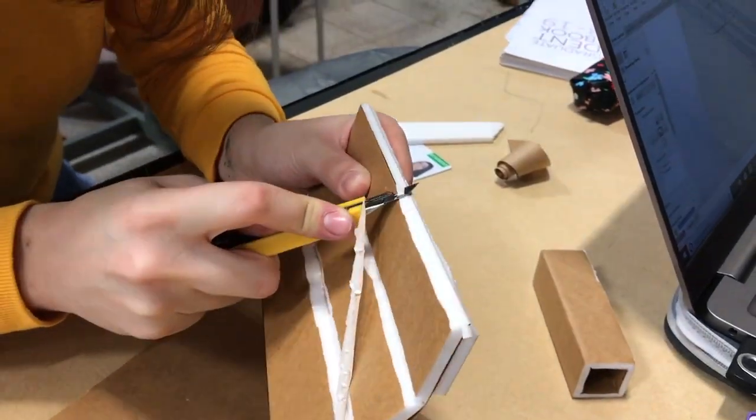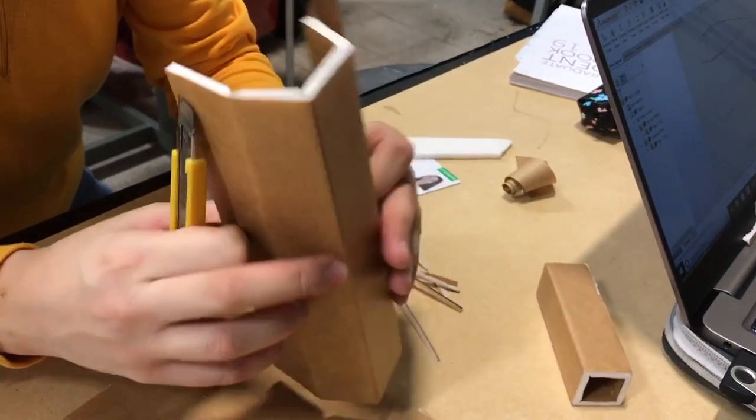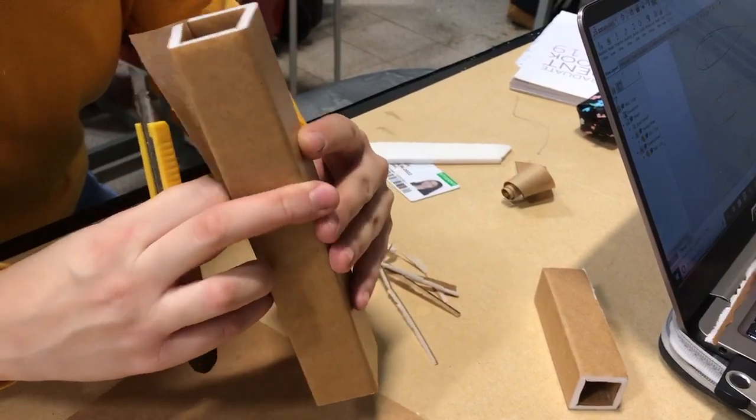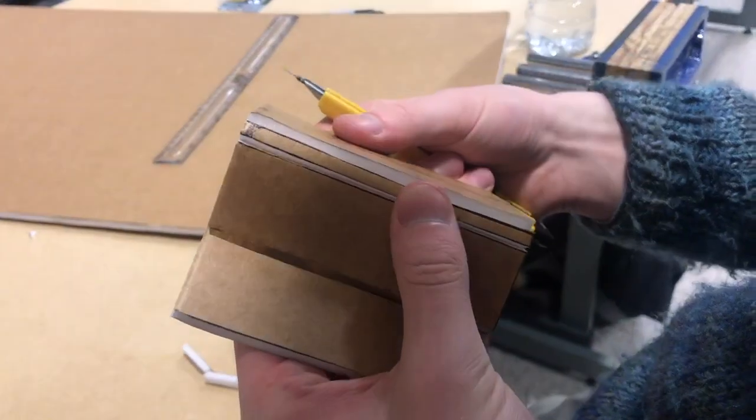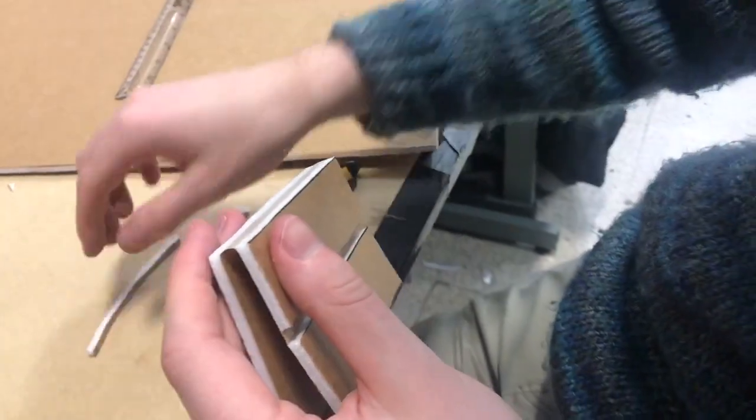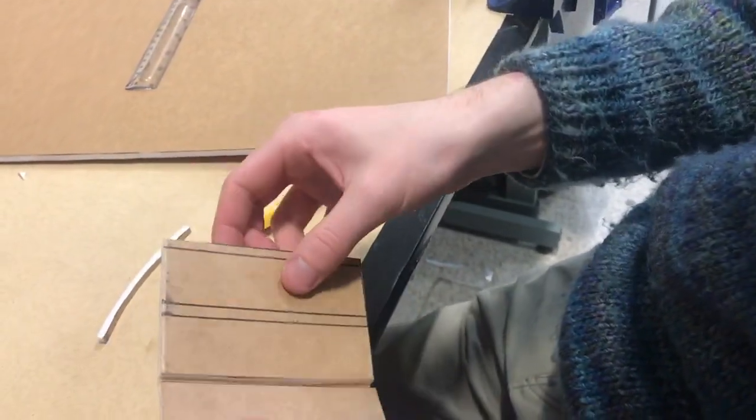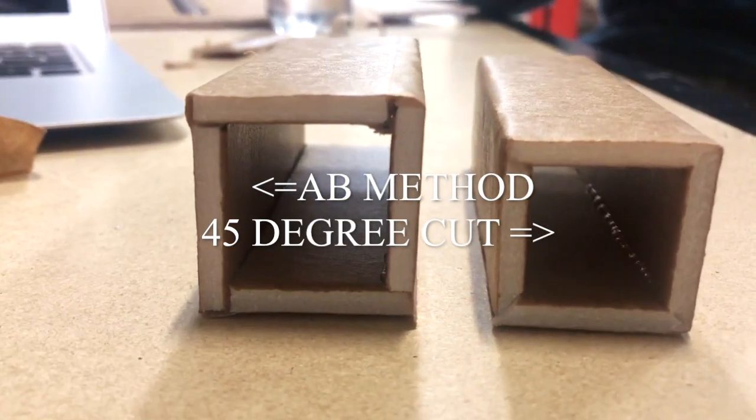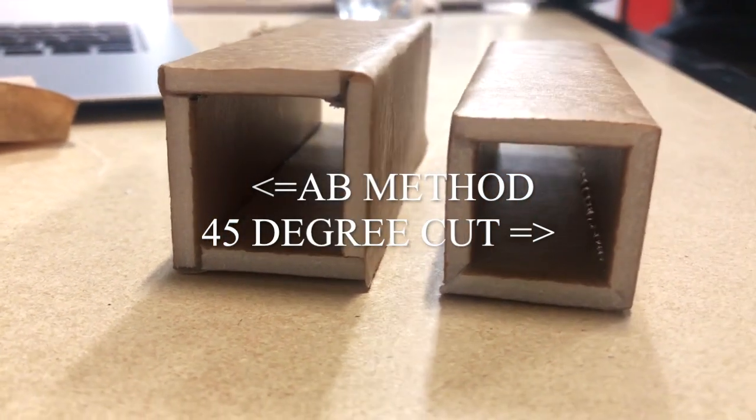Next we had to decide which spa construction method to use. We cut small pieces of material and tried to do it two ways – A&B method and 45 degree cut which turned out to be our final choice. It was easier to keep it square and the spa itself was stronger when glued this way.